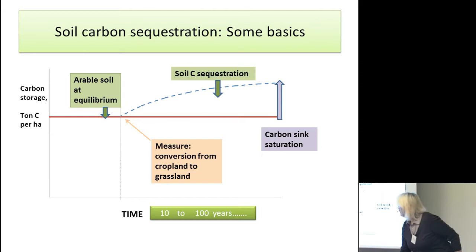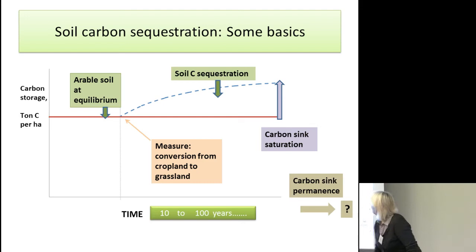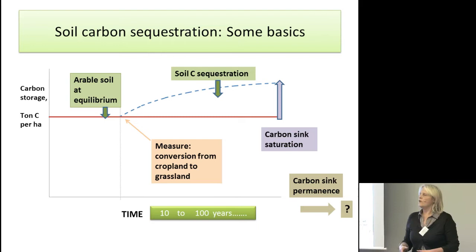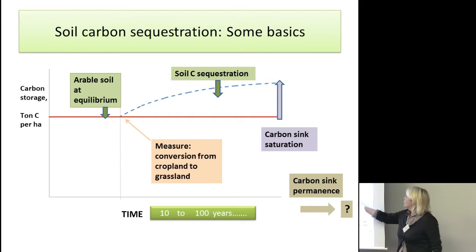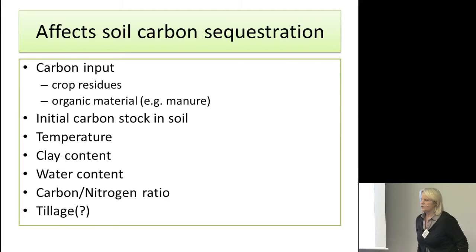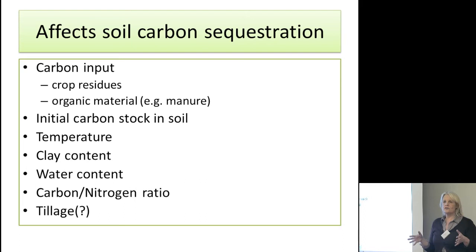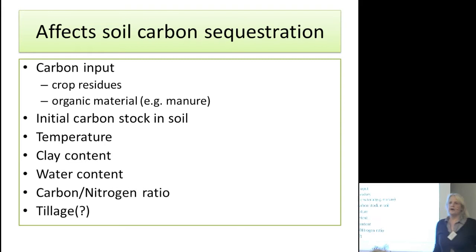This time frame can be 10 years or it can be 100 years — it depends on soil and on climate. It's typically faster in warmer climates than in colder climates. Then we have another important concept: carbon sink permanence. How long will this carbon sink actually last? That depends on land use afterwards, because we have to continue with this land use to actually hold the carbon in the soil. If we start to plow after 50 years, a lot of the carbon can very quickly go back to the atmosphere. Important factors for carbon sequestration include what type of carbon stock you had in your soil — a high carbon stock, an already saturated soil, or a degraded soil — and also the input of carbon: how much carbon you give the soil through residues or organic matter.